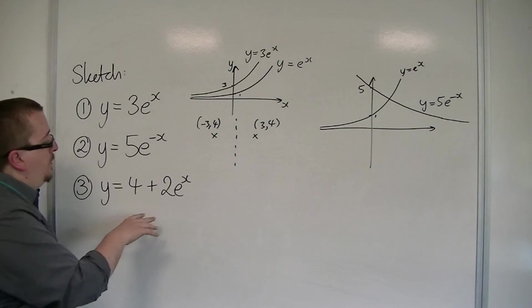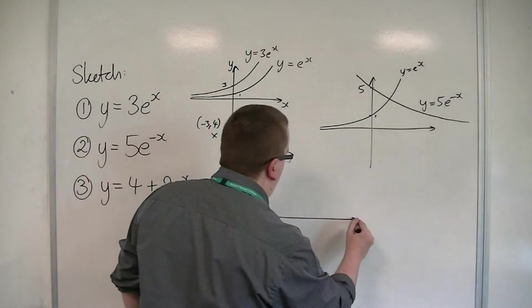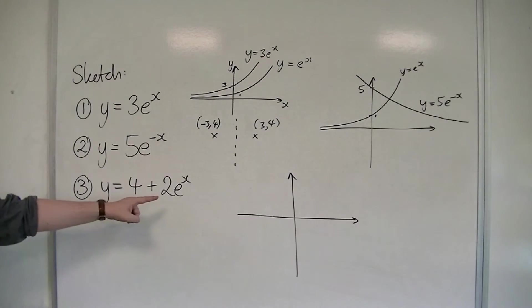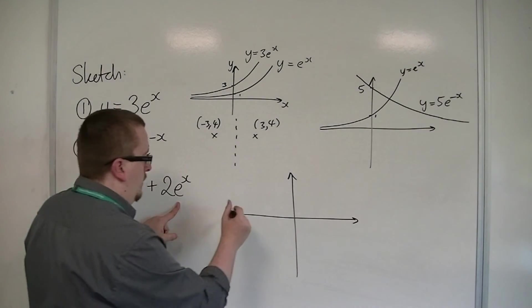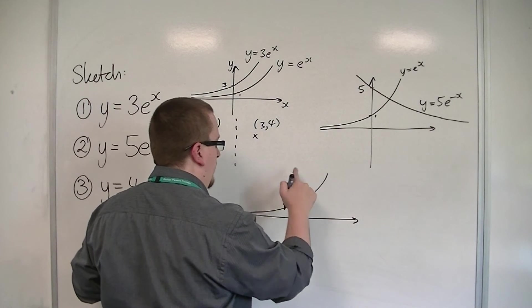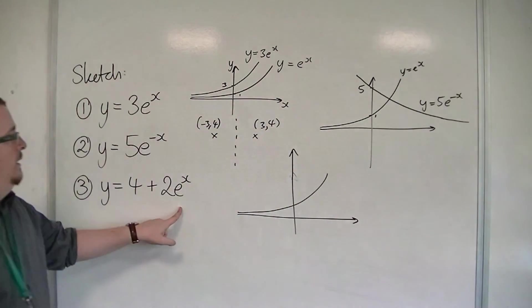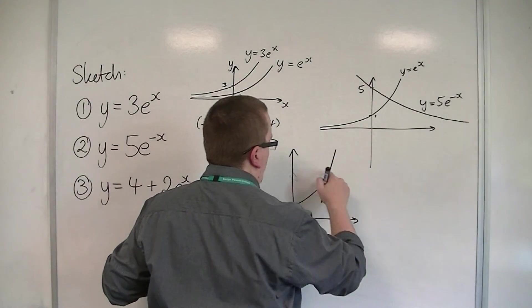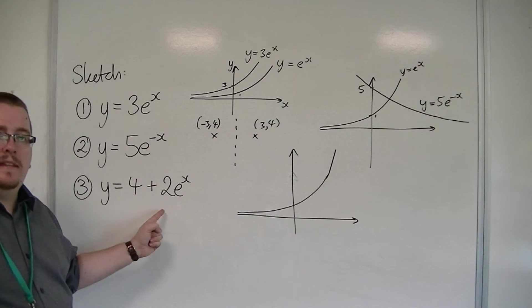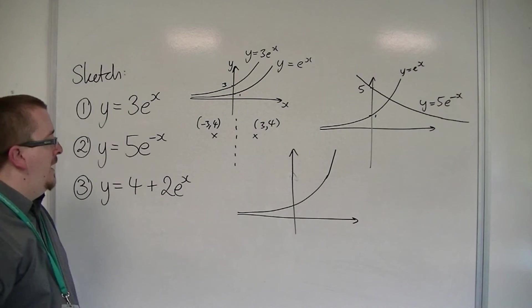Think of that minus x as being a reflection in the y-axis. For number 3, y = 4 + 2e^x. First of all, y = e^x would look like this. Now, the 2 in front of e^x is stretching the graph in the y-direction by a factor of 2.